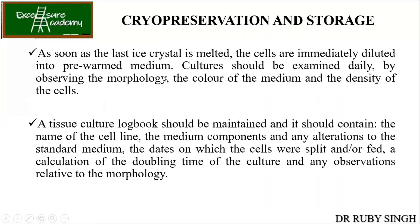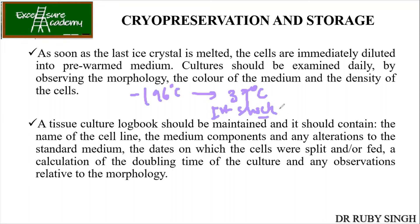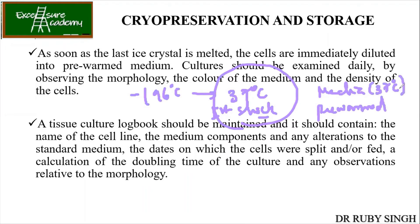It means that your medium — like DMEM, MEM, or RPMI as discussed earlier — should already be at 37 degrees Celsius in the water bath. Once the cells are brought to 37 degrees Celsius, you should not give any other shock to the culture. Already one shock has been given — from minus 196 degrees Celsius directly to 37 degrees Celsius. After this first shock, no other shock should be given; otherwise the cells are eventually going to die. So what we do is: since the cells are now at 37 degrees Celsius, the media should be pre-warmed, meaning the media is already at 37 degrees Celsius — so when you add the cells into this media, there is no other temperature shock.